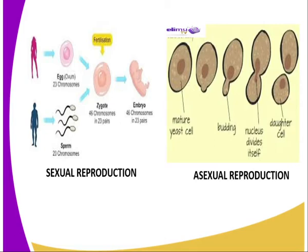Now I would like us to look at the importance of reproduction, because everything has got its own importance. The first importance of reproduction is that it is used for procreation. Reproduction sustains or perpetuates the species so that it does not become extinct, since no living organism lives forever.